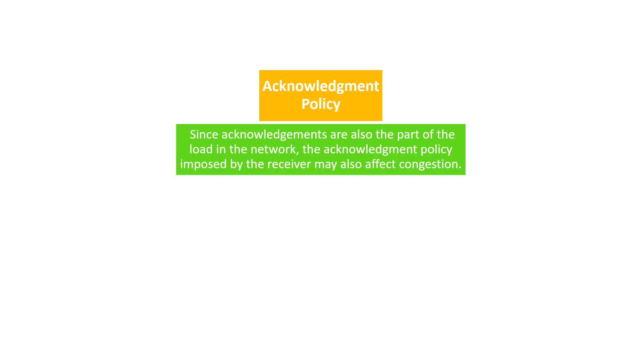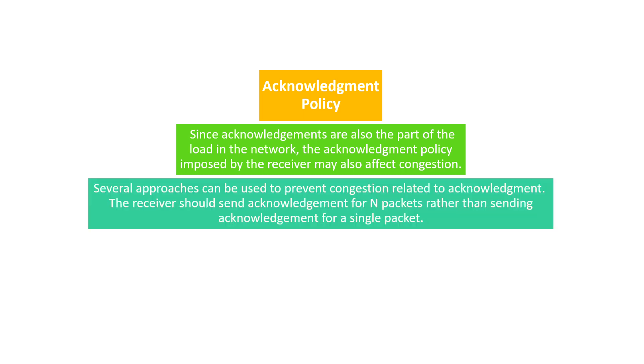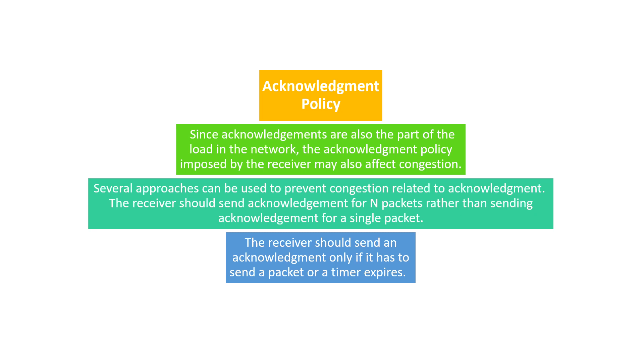Next is the acknowledgement policy. Since acknowledgements are also part of the load in the network, the acknowledgement policy imposed by the receiver may affect congestion. Several approaches can be used: the receiver should send an acknowledgement for n packets rather than sending one for a single packet, and the receiver should send an acknowledgement only if it has a packet to send or a timer expires.